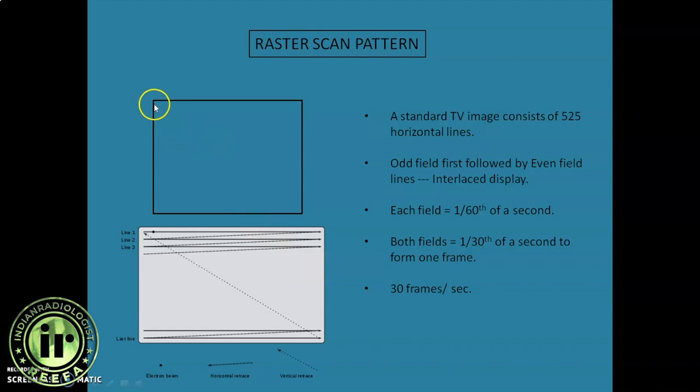Now I will show you live animation how the raster scan pattern is done. As you can see each dot starts from the top left, proceeds to the right. Now line 1 is completed. Now line 3. Now again it proceeds to line 5. So the odd field is completed.